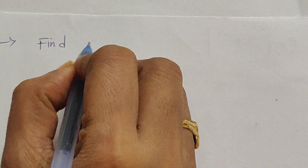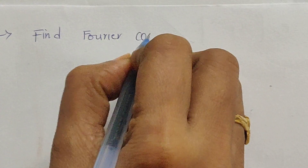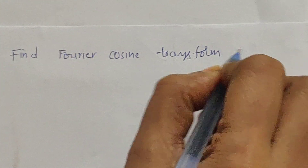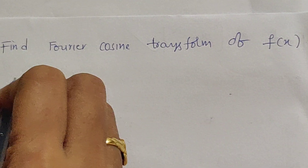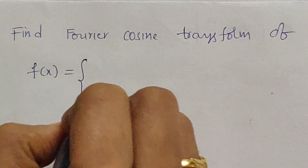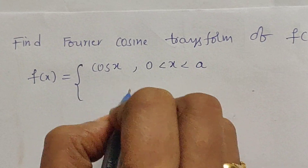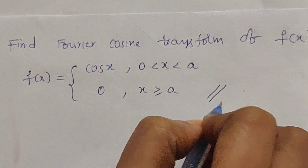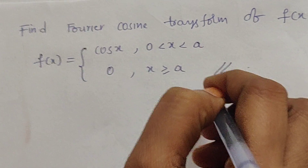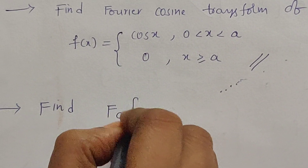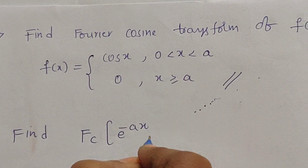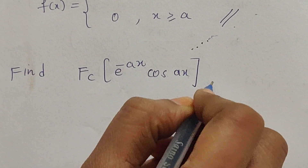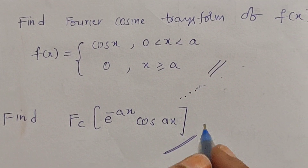One more problem I am giving you: find the Fourier cosine transform of f(x), where f(x) = cos(x) for 0 < x < a and 0 for x ≥ a. And one more problem: find the Fourier cosine transform of e^(-x)·cos(ax). These two problems are left to you. This completes the problems on Fourier transforms.